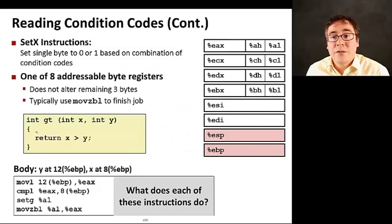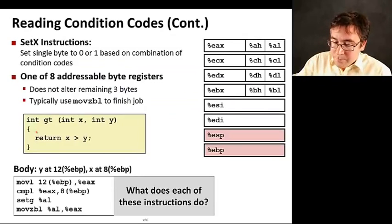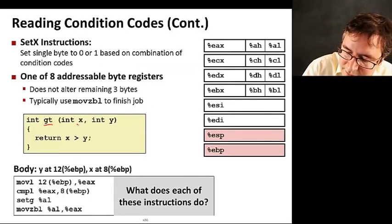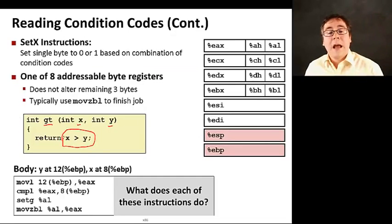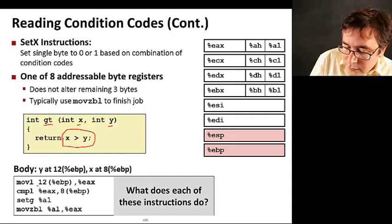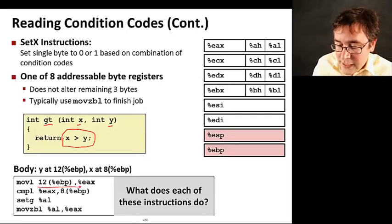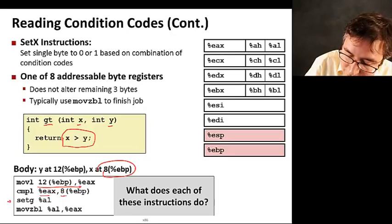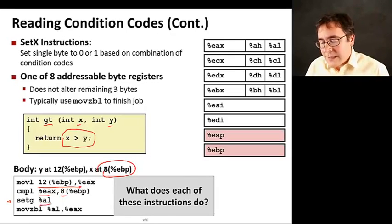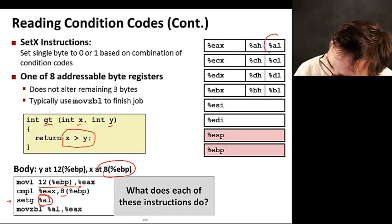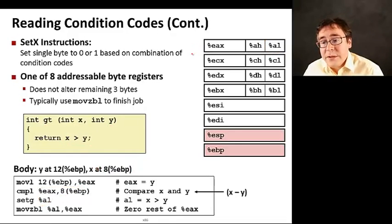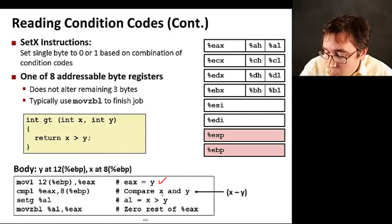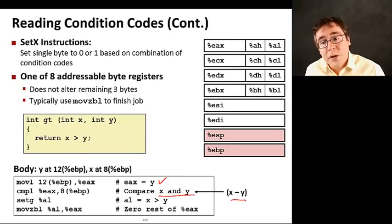Let's see an example now of using the set instructions to read condition codes. Here we have a function called GT that just takes X and Y as parameters. And then we want to return whether X is greater than Y. Here's the body of the instruction. What we are doing is getting Y and storing it in EAX. Now we are comparing Y with X because X is stored in 8 from EBP. Now we're doing set greater in AL. What is set greater doing? Set greater is going to get—and we're passing AL here, which is the low order byte of the EAX register. Here we're reading Y and putting it in EAX, comparing X and Y, essentially comparing and doing a subtraction and just setting the condition codes. Then AL now is going to be set to 1 if X is greater than Y, and it's going to be set to 0 otherwise.